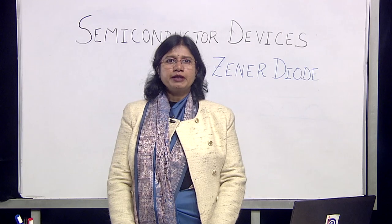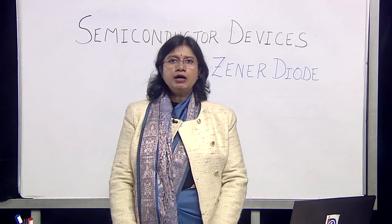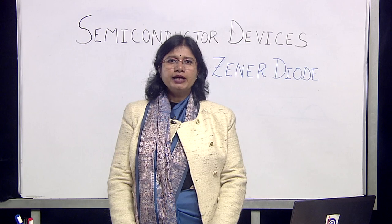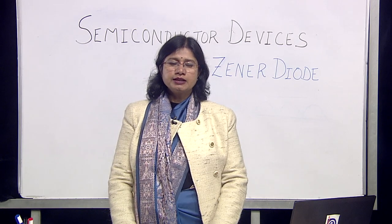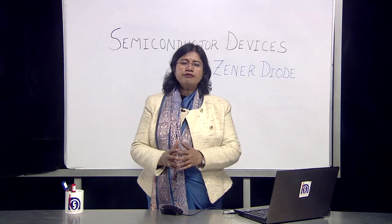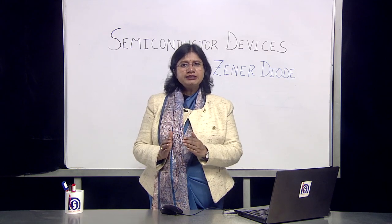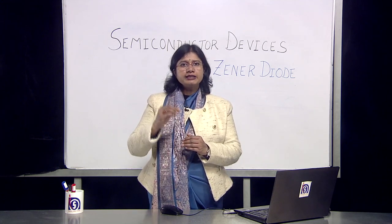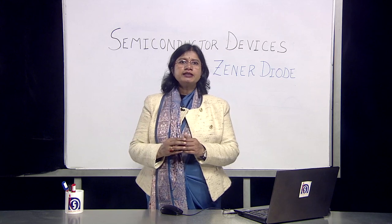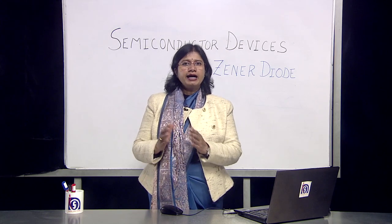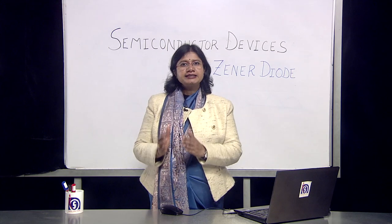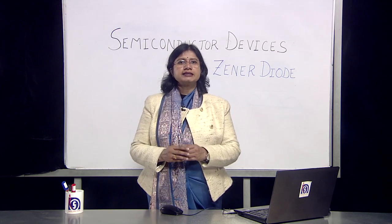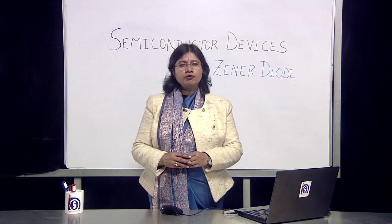In this topic we have learnt about the working of the Zener diode as a voltage stabilizer or voltage regulator. The input from the rectifier is filtered via the LC circuit, and that filtered output which has some ripples is further regulated via the Zener diode, ultimately giving a stable output. Thus a Zener diode works like a voltage regulator. Thank you learners.